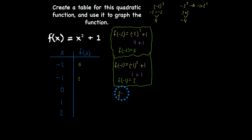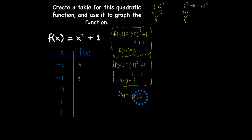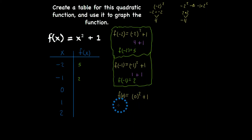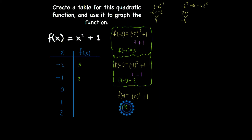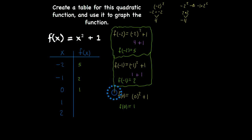So f of 0 — I like this one. Now I have 0 raised to the second power plus 1. Zero times itself is basically nothing, so I'm left with f of 0 is equal to positive 1.